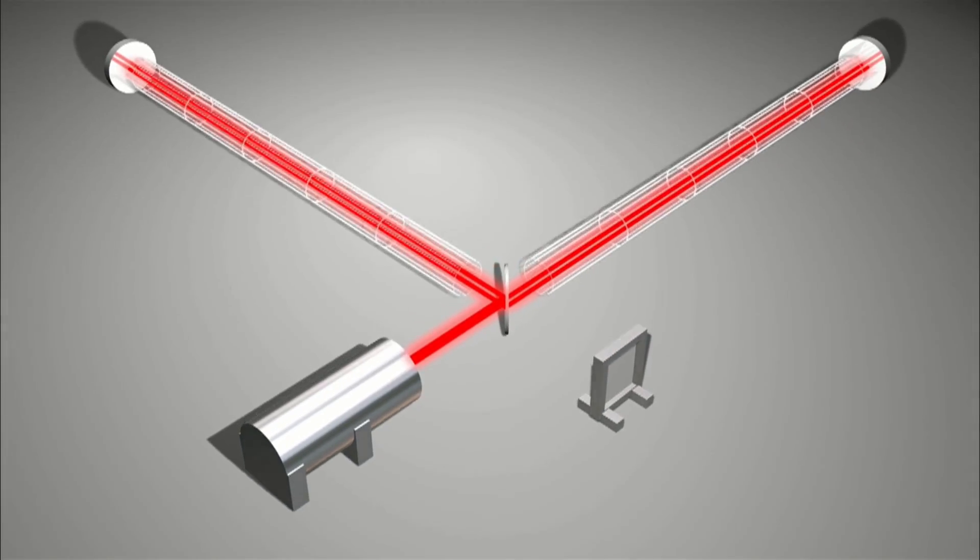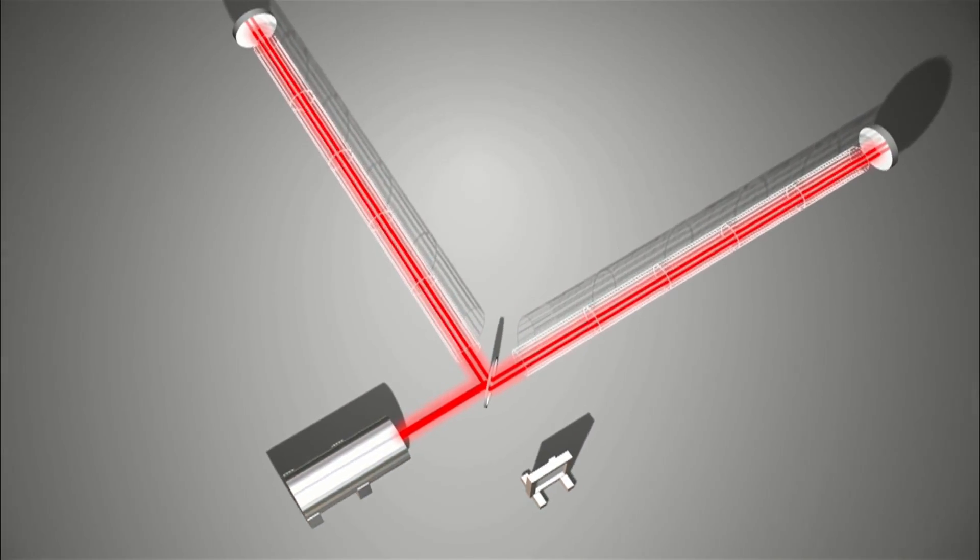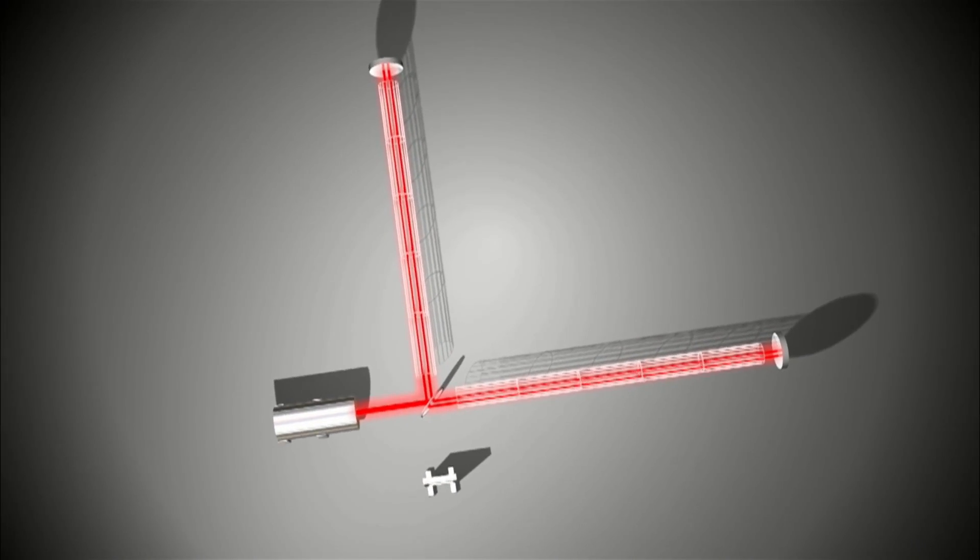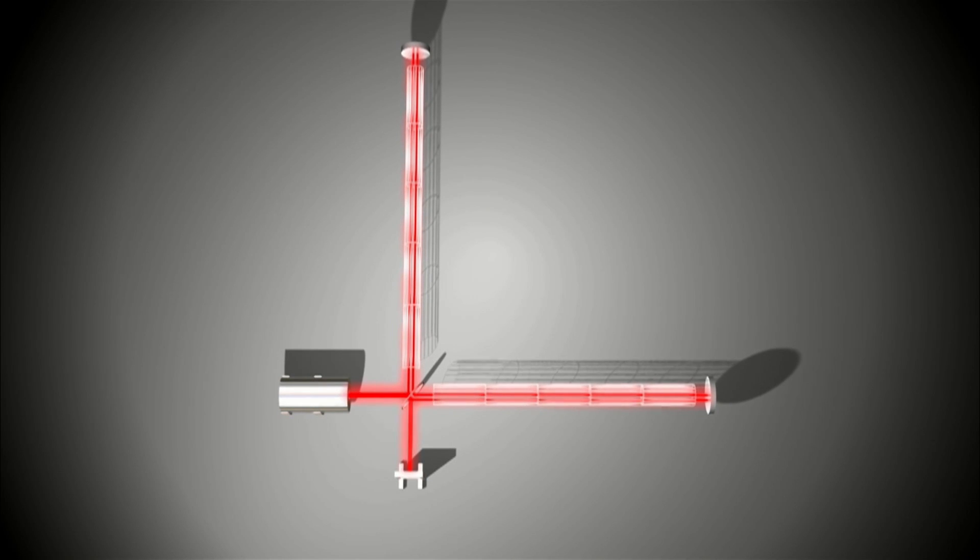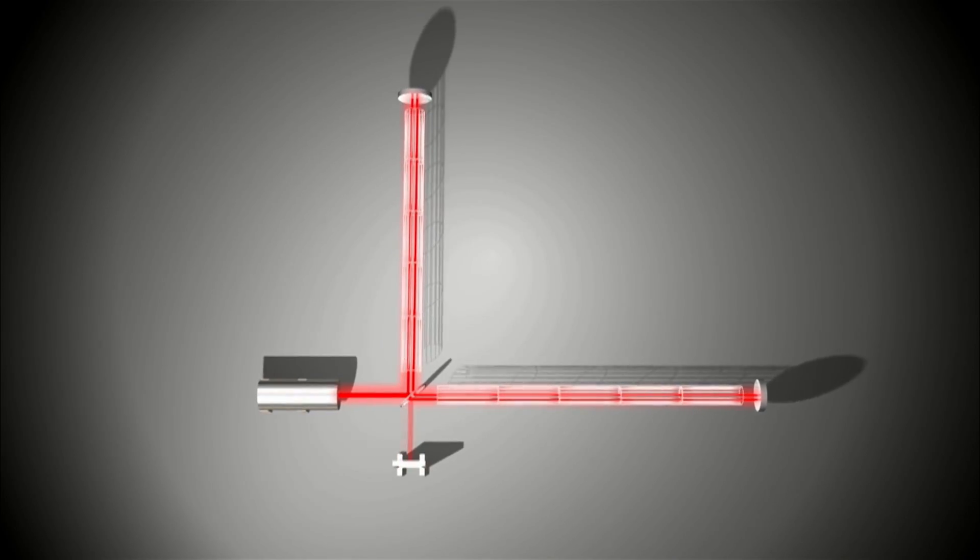But when a gravity wave comes along, it distorts space and changes the distance between the mirrors. One arm becomes a little longer, the other a little shorter. An instant later, they switch.